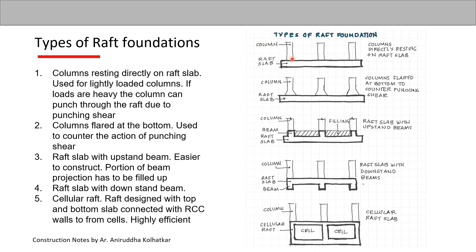In the first case, the columns are directly resting on the slab. In the second case, to overcome the problem of punching shear, the bottoms of the columns are flared. Columns flared at the bottom are used to counter the action of punching shear. That is sketch number two.